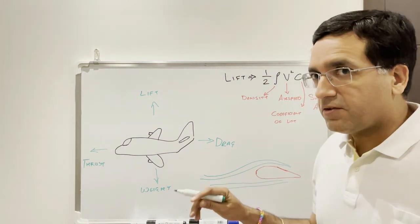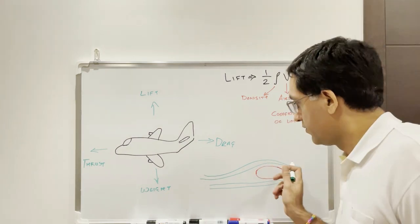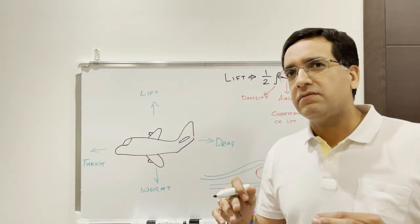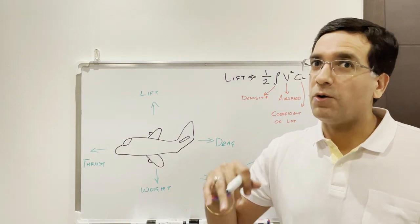So the air has to travel at a greater speed, the venturi effect, on top of the wing, and this causes a drop in the ambient pressure on top of the wing.